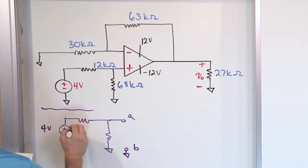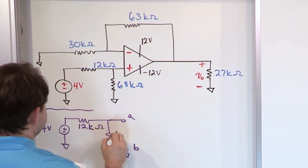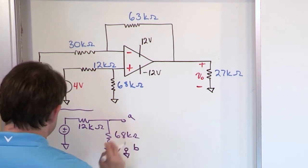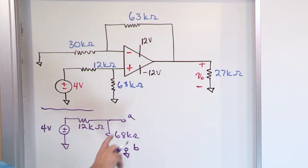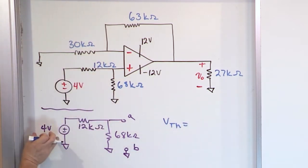Like this. And this is 4 volts. And this is 12K. And this is 68 kilo ohms. Now how do we find the Thevenin equivalent voltage? That's the open circuit voltage from A to B.